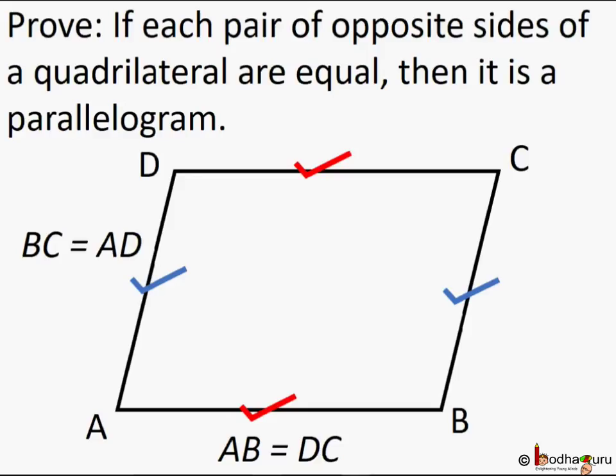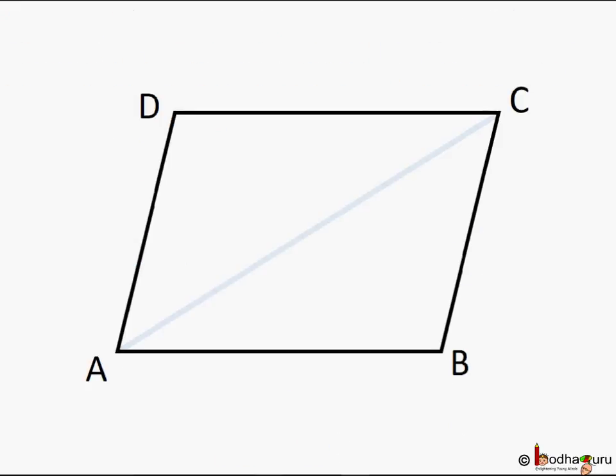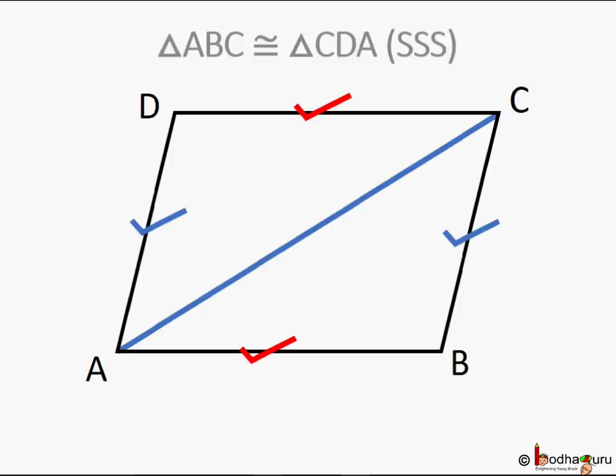Hello friends, in our previous lessons we proved if opposite sides are equal in a quadrilateral then that quadrilateral is a parallelogram, and we also proved if opposite angles are equal in a quadrilateral that quadrilateral is a parallelogram. But by definition of parallelogram we say opposite sides are parallel and equal.